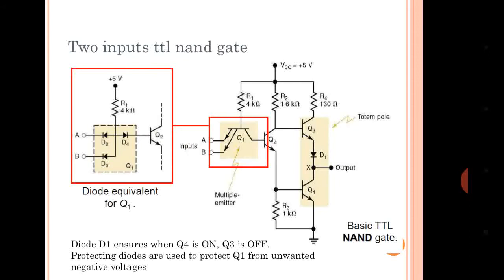We have to discuss about its operation. This circuit consists of four transistors — Q1, Q2, Q3, and Q4 — and one diode, plus some resistors. If you observe Q3, diode D1, and Q4 — this particular arrangement is called the totem pole. We will talk about the advantages of this afterwards.